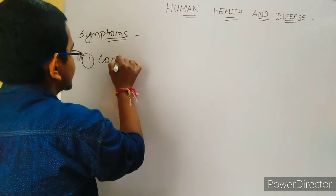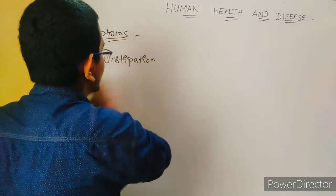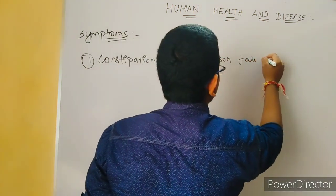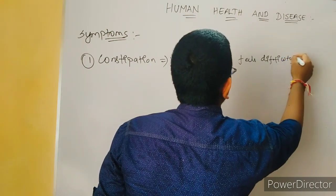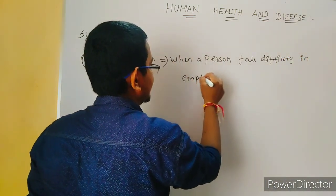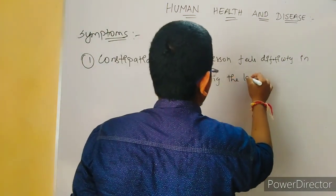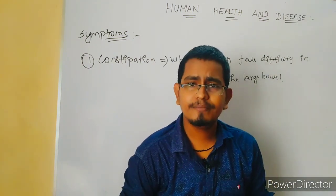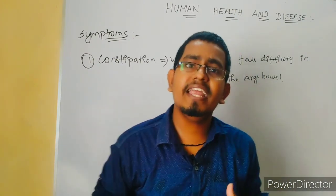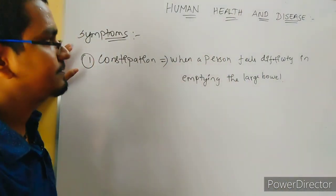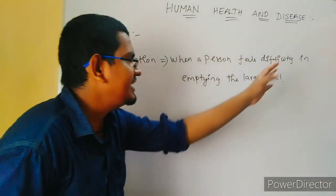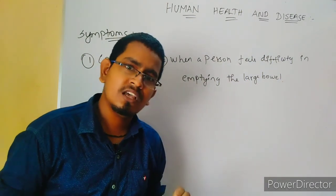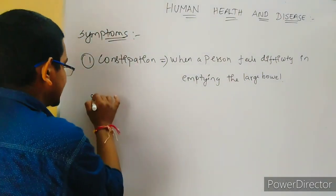The symptoms of amoebiasis are: first, constipation — when a person feels difficulty in emptying the large bowel, or difficulty removing feces from the body. Second, abdominal pain.